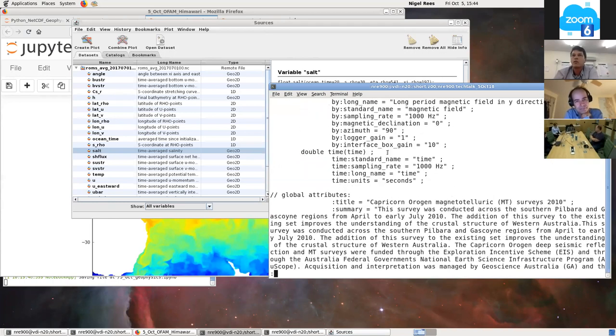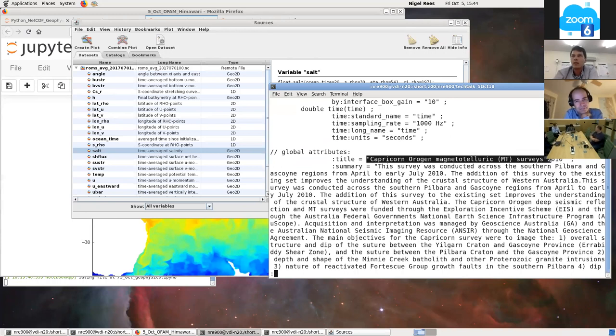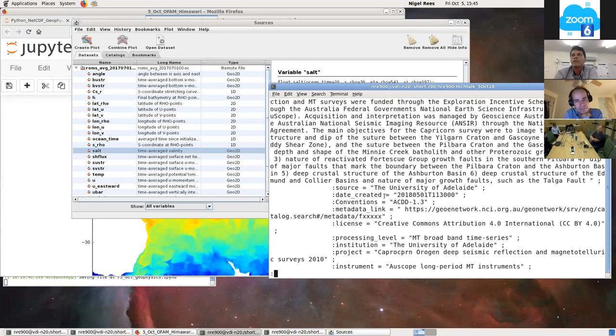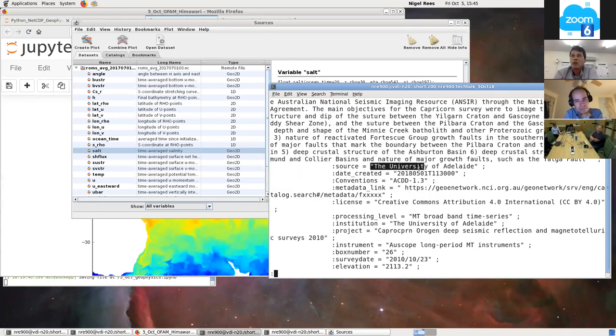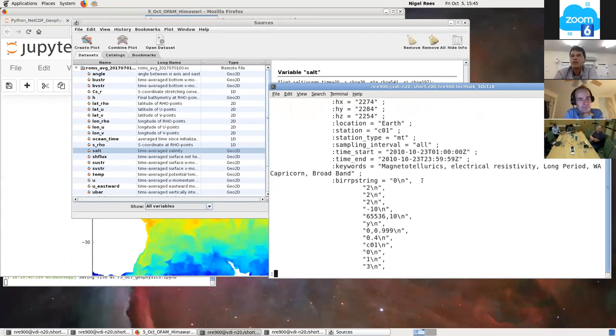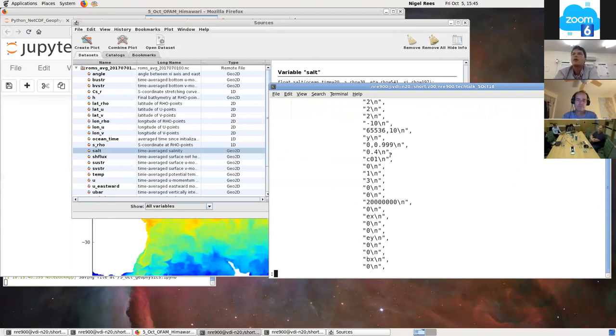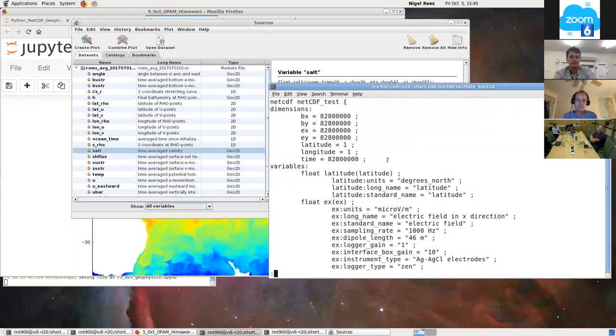Additionally, there are some global metadata. So you can include a title of your survey, summary, some sort of abstract, who recorded the data, the date created, the conventions used, as well as things like, for example, in MT, they have a typically time series processes done with a program called BIRRP. And so that creates, that takes various inputs. So you can put the exact inputs you use to create your data set, and someone else can reproduce using the variables you use. So it's good for reproducibility, capturing all this metadata.